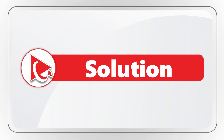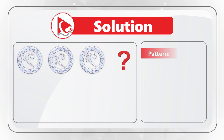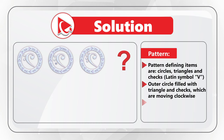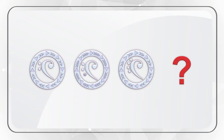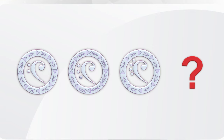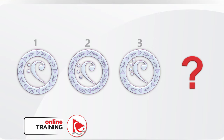As you might have guessed, the key is to define the pattern. The pattern consists of multiple elements — pattern-defining items are circles, triangles, and checks, which look like the Latin symbol V. If you look closely at the outer circle, it's filled with triangles and checks which are moving clockwise. The inner circle also has smaller circles inside. Let's name our items in the original pattern as item 1, item 2, item 3, and the missing item as item 4. This will help us to define the pattern.